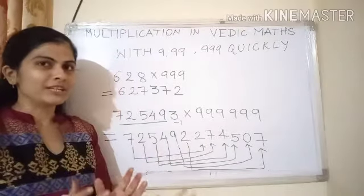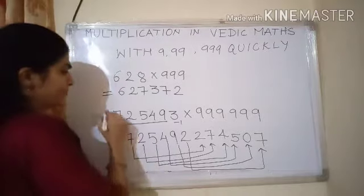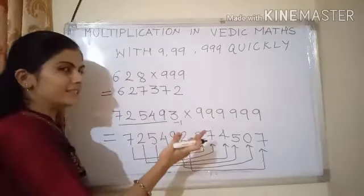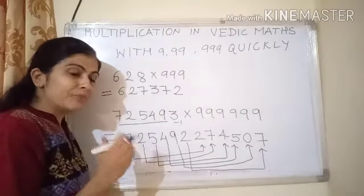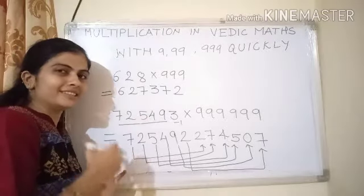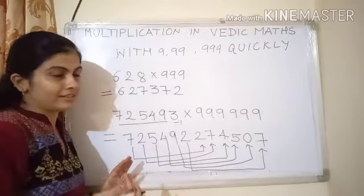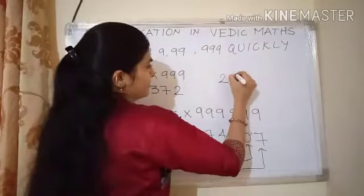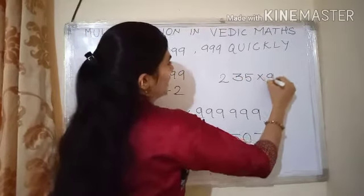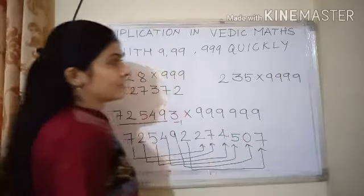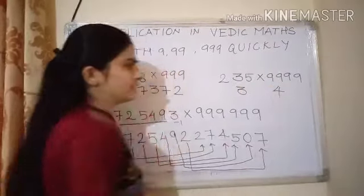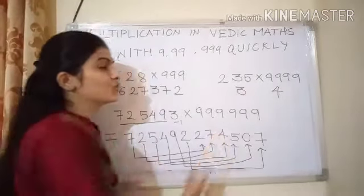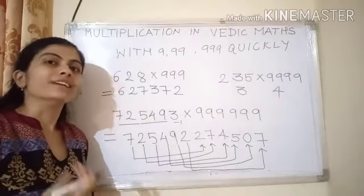Now big question is here numbers are balanced. It means if these are 6 digits, these are also 6 digits. Here 3 digits, then 3 digits. It is balanced numbers. Numbers on the left-hand side is equal to numbers on the right-hand side. But what if numbers are not balanced? It means 325 into 9999. Just 3 digits and 4 digits. How to do this in the imbalance situation? What is the solution? Is it possible?